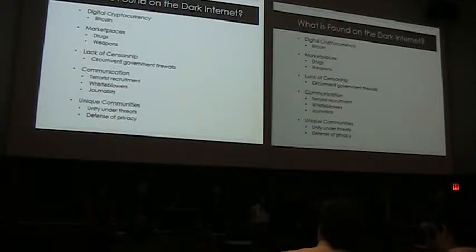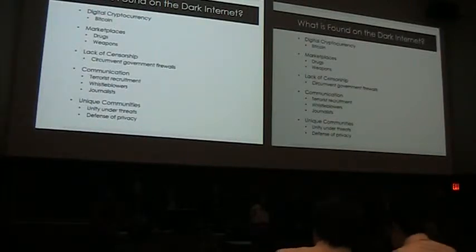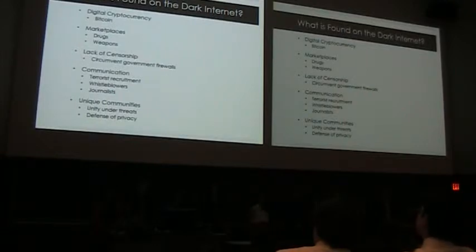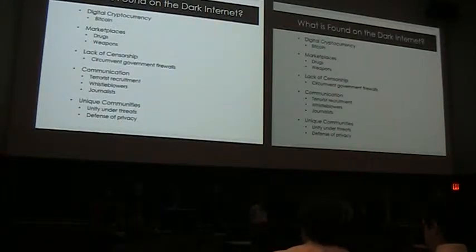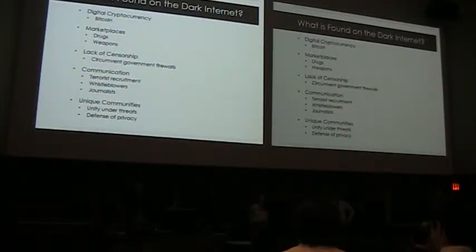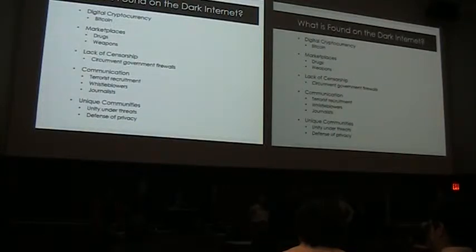What is found on the Dark Internet? Specifically on the Tor browser, which our research will be focusing on, we compiled a list of a few big components. One is digital cryptocurrencies. Using personal credit cards defeats the whole point of anonymity, so a popular cryptocurrency is Bitcoin. With Bitcoin, you can access different online marketplaces where popular products to purchase are drugs and weapons. On the other hand, there is a lack of censorship on the Tor browser — it's not regulated by anybody — so users use it to circumvent government firewalls, such as citizens of China.